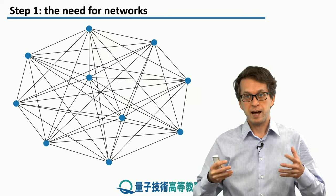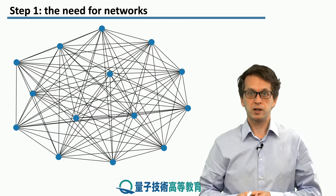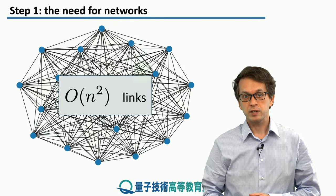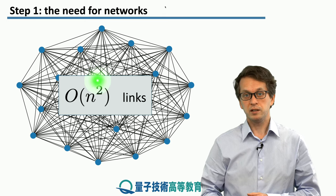And we can see that as we are adding more and more devices into the network, more and more nodes into the network, then the number of links is also increasing. And in fact it's increasing in the quadratic order of the number of nodes in the network.